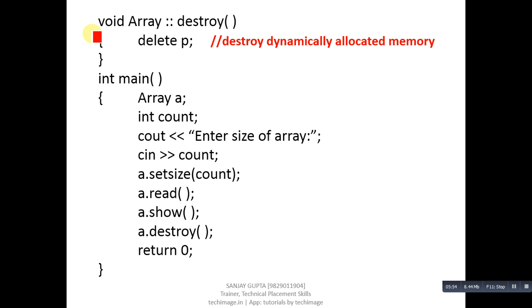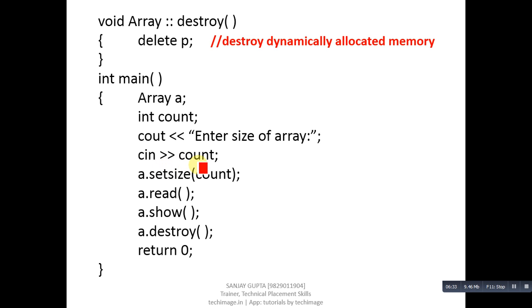The fourth function is destroy, which uses 'delete p' to deallocate the memory acquired by the program at runtime. When the scope of the main function terminates, delete p executes and frees all dynamically allocated memory. In the main function, object 'a' is declared and an integer variable count is used to read the array size from the user. setSize is called with count to perform dynamic memory allocation. Then read reads the elements, show prints them, and destroy deallocates the dynamically allocated memory.